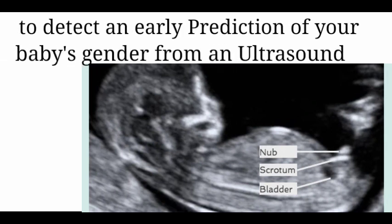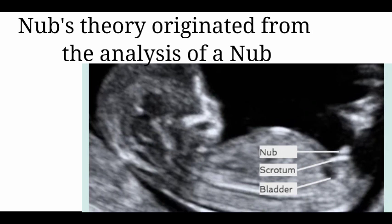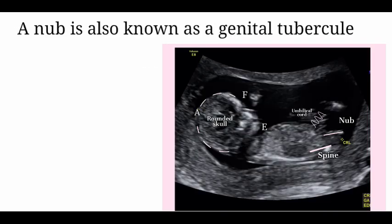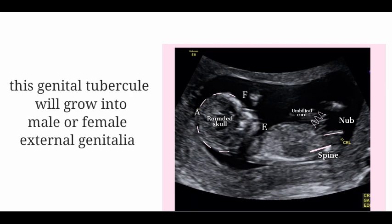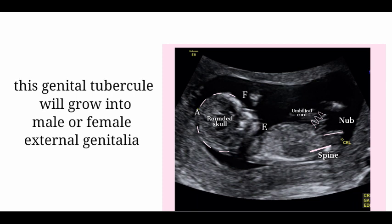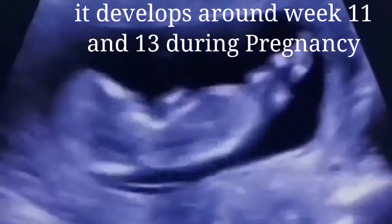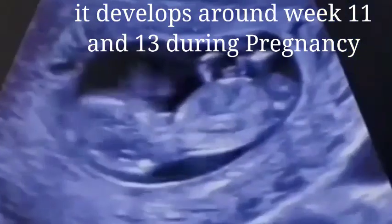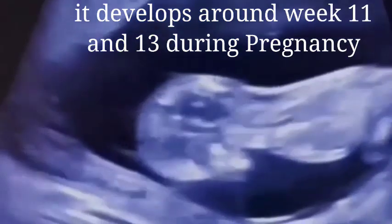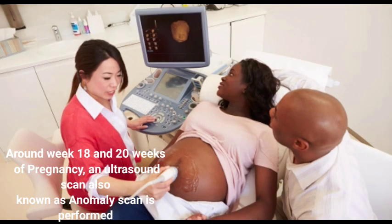Nub Theory originated from the analysis of the nub. A nub is also known as a genital tubercle. This genital tubercle of your child will grow into male or female external genitalia, defining their gender. It develops around weeks 11 to 13 during pregnancy.